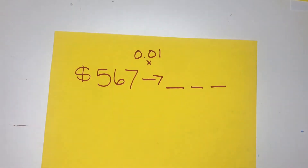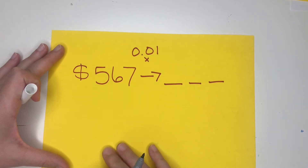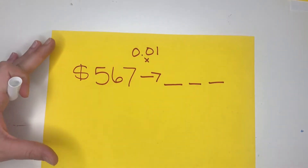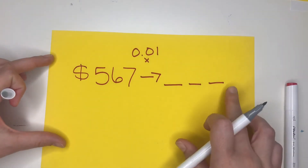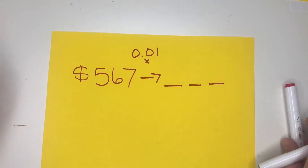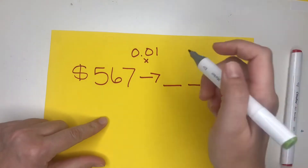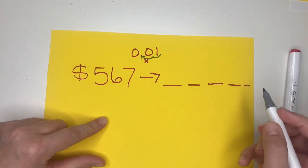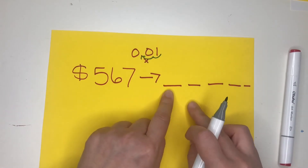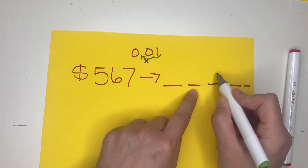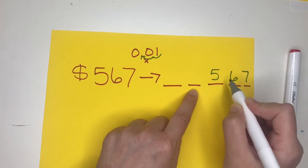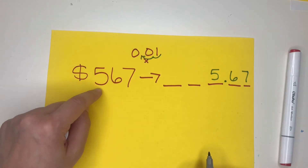Let's look at this again with a different number. I have my lines all drawn out. I have 567 times one hundredth. Think about how many new places we'll need after the decimal. If you said two, you're correct — we're going to have two new places after the decimal, because this number has two places after the decimal. So we're going to abandon the hundreds place, abandon the tens place, and shift it. Our decimal is now between the five and the six.